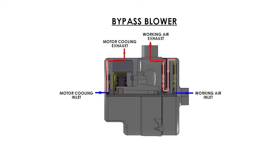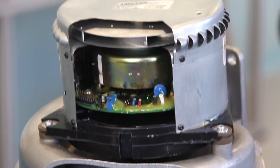A bypass design has two basic air movement sections to the blower. One, the working air — meaning the functional purpose of the blower. And two, the motor and electronics compartment that requires clean, breathing-quality air circulation for proper thermal management of the blower.